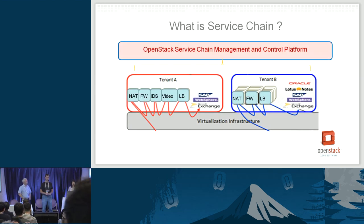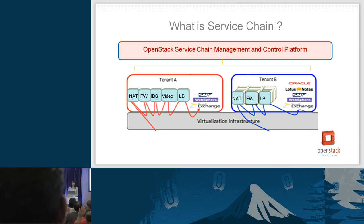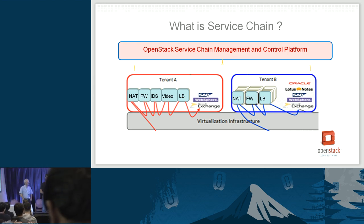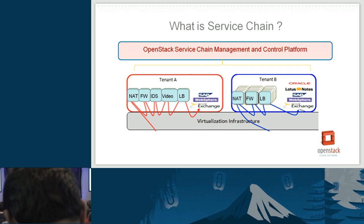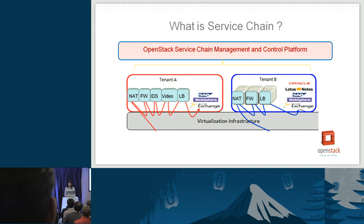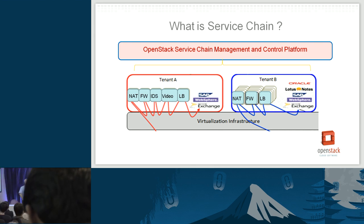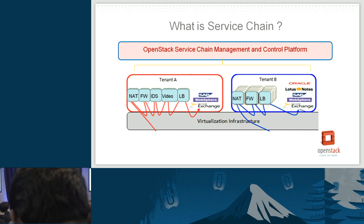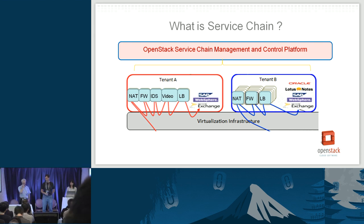How many people know what is service chain? By service chain, what we mean is through a centralized OpenStack-based service chain management and control platform, different tenant flows can be automatically provisioned to go through different sequences of service functions. Service functions include NAT, firewall, intrusion detection service, video optimizer, load balancer, et cetera. These service functions can run on a VM, container, or physical box.